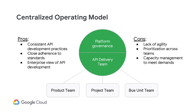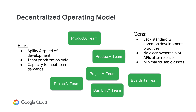A decentralized operating model has the agility and the speed, but lacks the standards and common development best practices. This, combined with a lack of clear ownership after the APIs are released, showcases how different this model is compared to that of the centralized model.